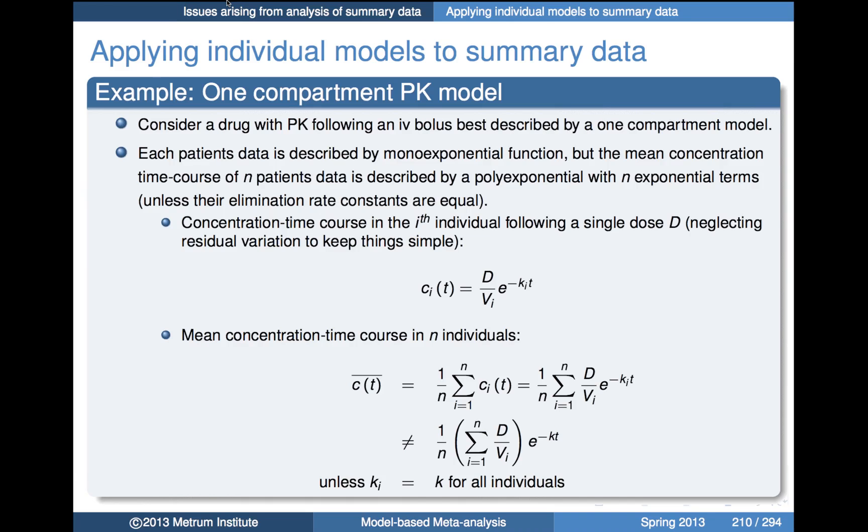We commonly apply models originally developed to describe responses in individuals to aggregate data, particularly sample means. However, those models are strictly relevant only for describing responses in individual organisms and not for summary statistics for groups. In particular, for nonlinear individual models, they don't in general collapse to the same model or functional form when we look at sample means, except in cases where the model function is linear with respect to individual-specific parameters.